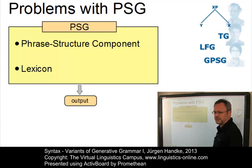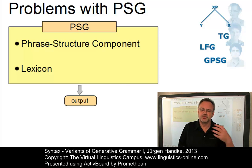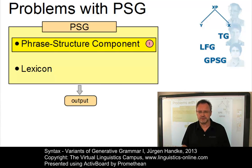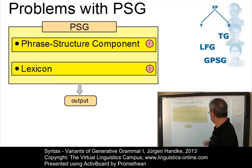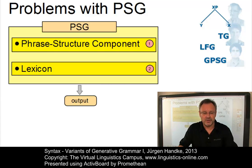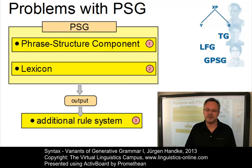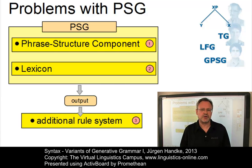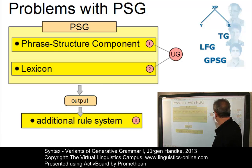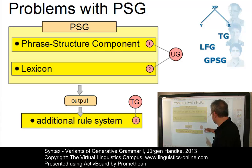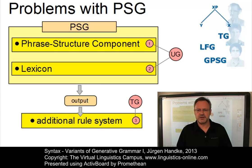So what can we do in order to solve these and further problems? The solution involves the following alternatives. We could expand the phrase structure component – suggestion number one. An alternative could be that we expand the lexicon – alternative number two. Or a third alternative would be to introduce an additional rule system. Variants one and two are favoured by the class of unification grammar, abbreviated as UG. The introduction of an additional rule system is the solution represented in transformational grammar, the standard abbreviation TG.